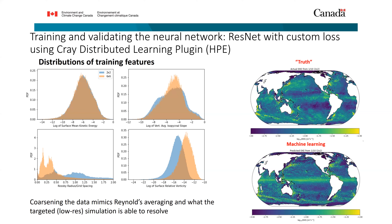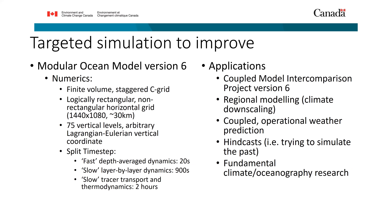The neural network is trying to give the absolute best prediction of eddy kinetic energy grid cell by grid cell, which leads to a natural sharpening of the predictions. One of the reasons we really want to improve this particular simulation is because it was used in the CMIP intercomparison project, for regional modeling, for coupled operational weather predictions, for simulating the past, and for fundamental climate and oceanography research — so it has a lot of use cases.